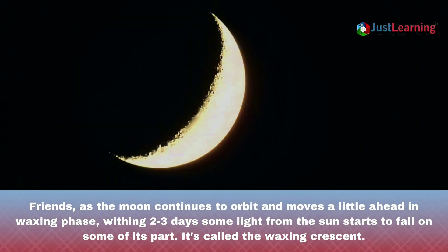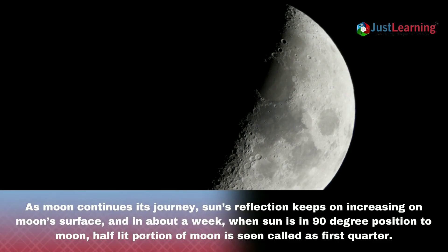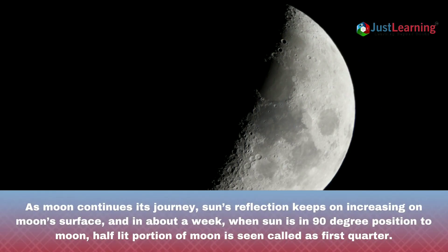Friends, as the moon continues to orbit and moves a little ahead, in the waxing phase, within two to three days, some light from the sun starts to fall on some of its part — it's called the waxing crescent. As the moon continues its journey, the sun's reflection keeps on increasing on the moon's surface, and about a week later, when the sun is at a 90-degree position to the moon, a half-lit portion of the moon is seen, called the first quarter.